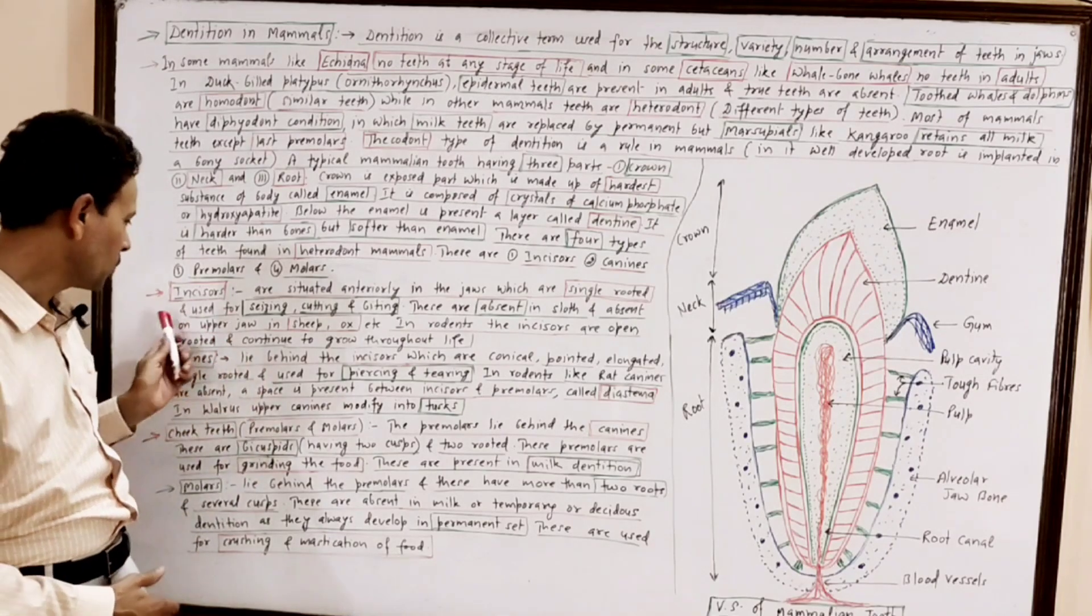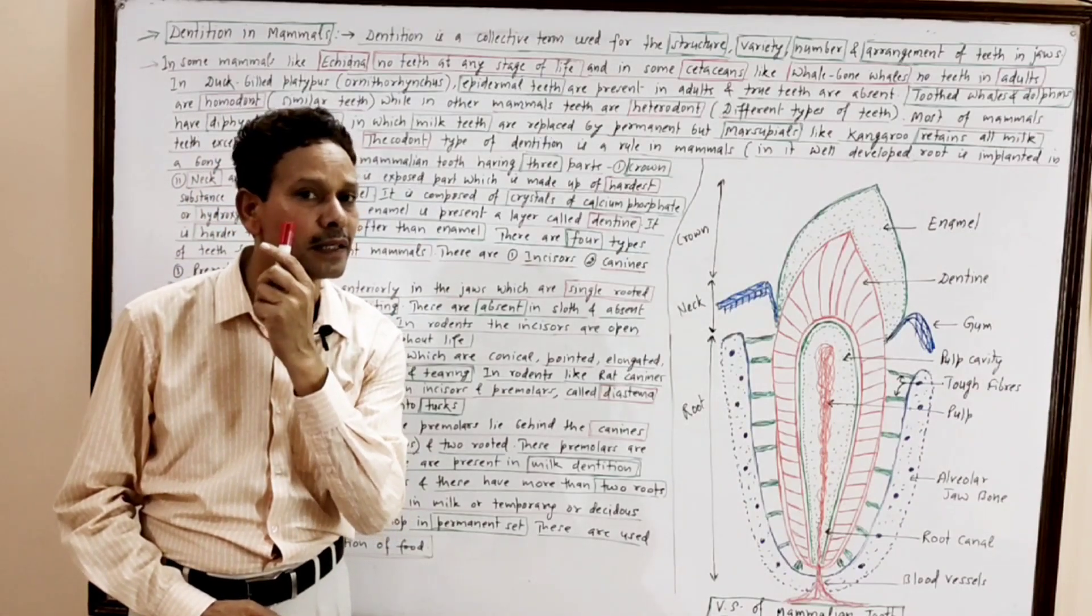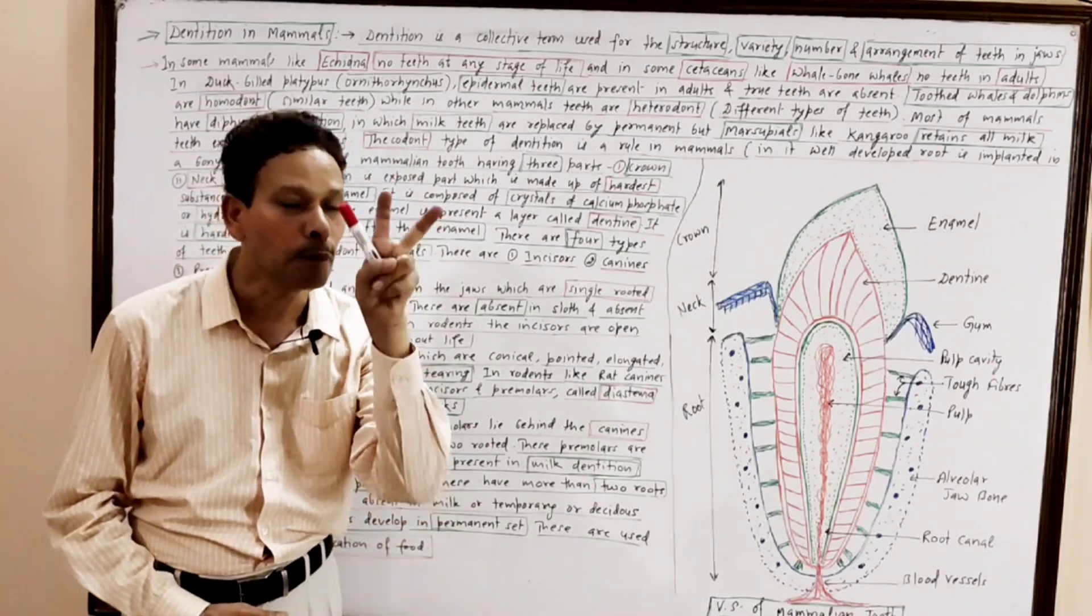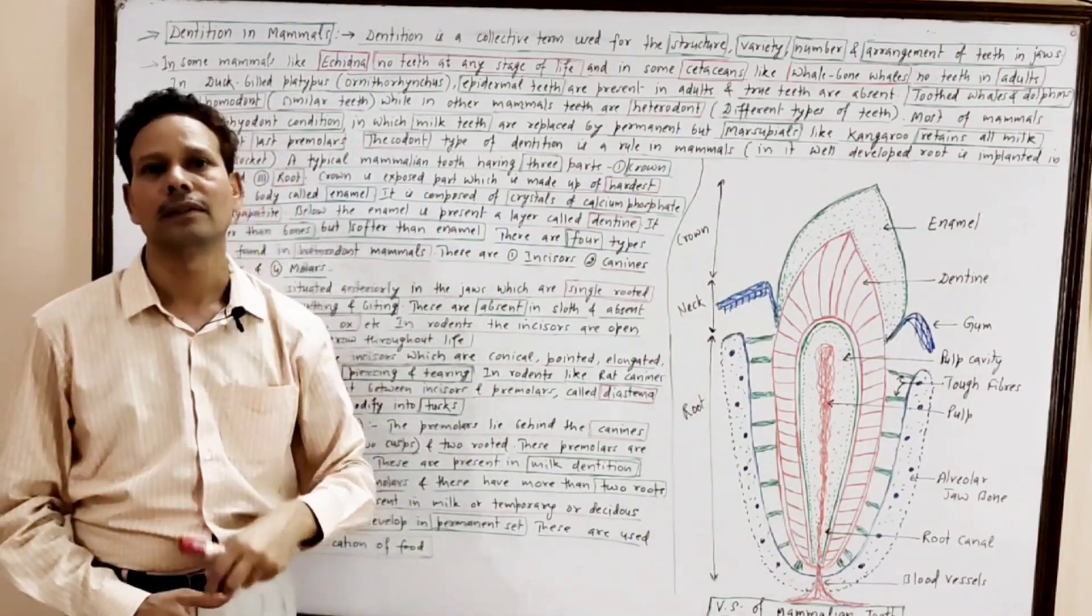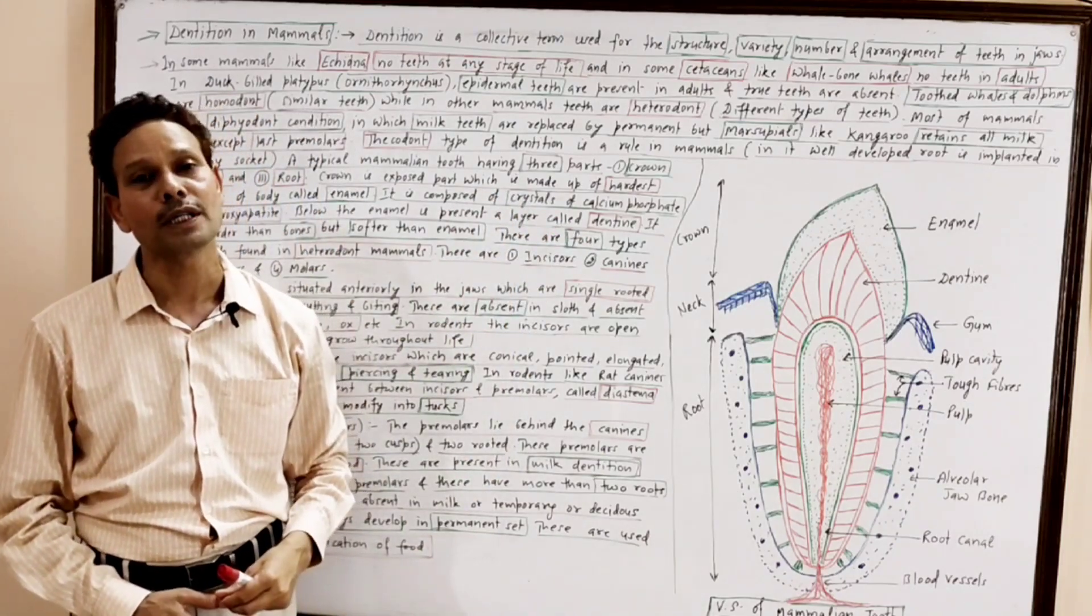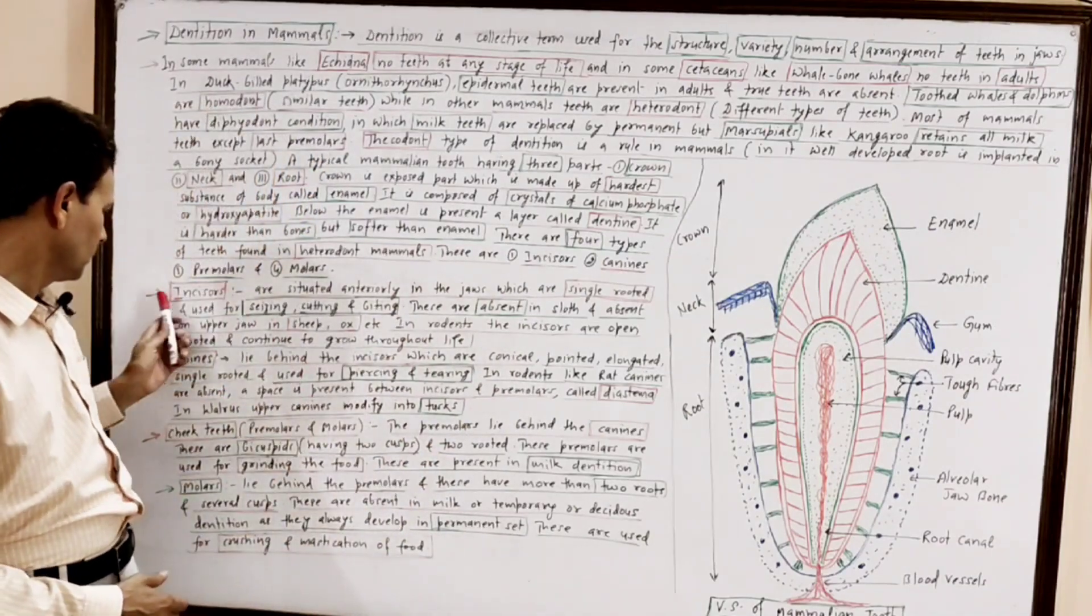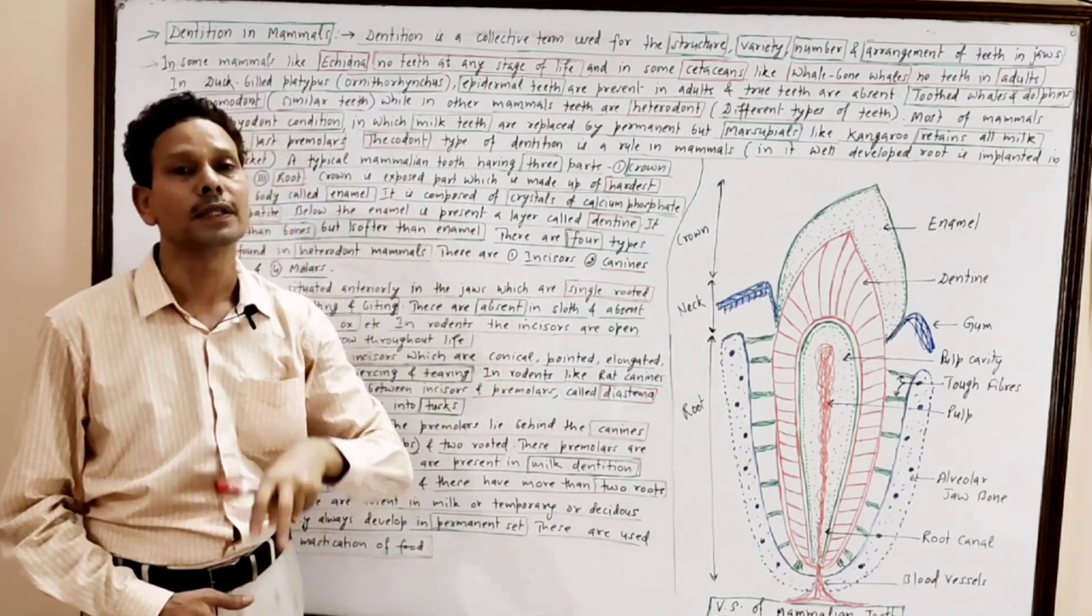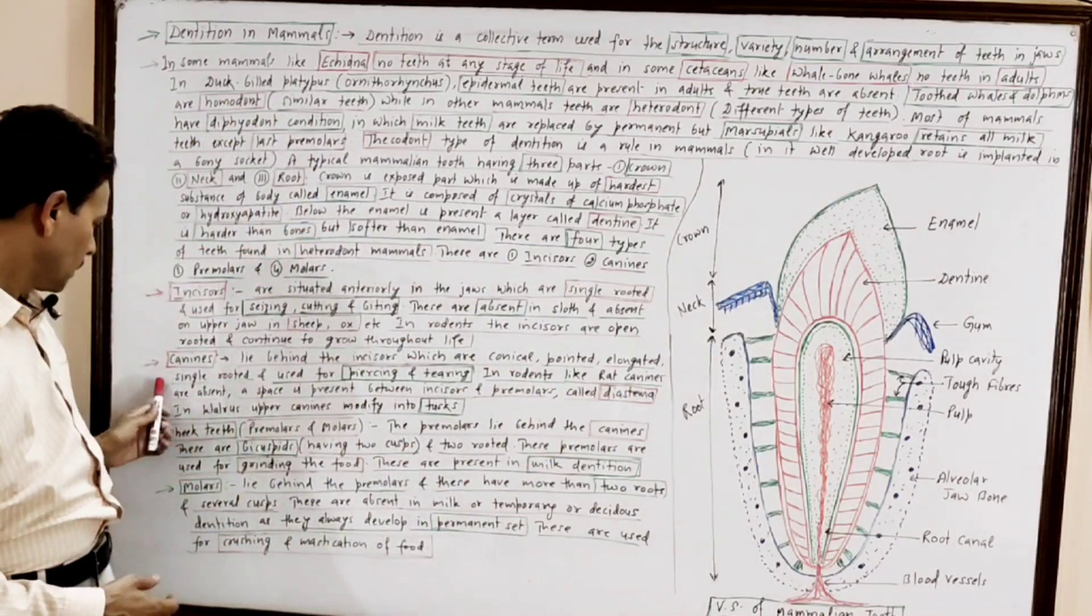Canines, just behind the incisors, in lateral positions, canines are present. These are conical, pointed teeth. These are involved in piercing and tearing the food particles. The canines are large-sized in carnivores. But in case of man, these are greatly reduced. In case of walrus, the upper canines get modified into tusks.